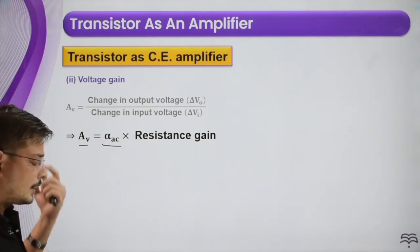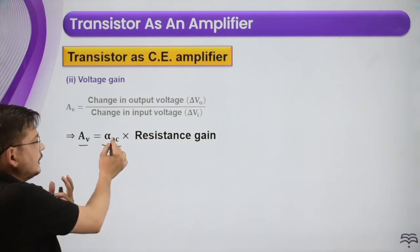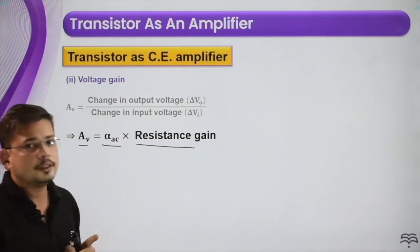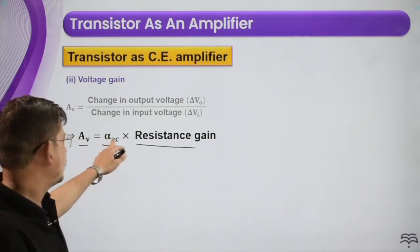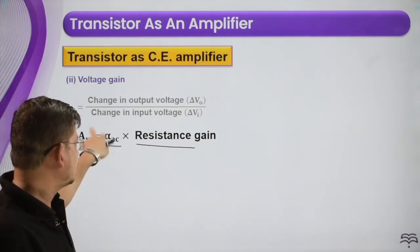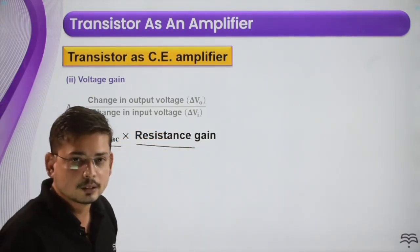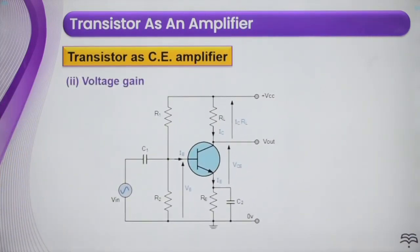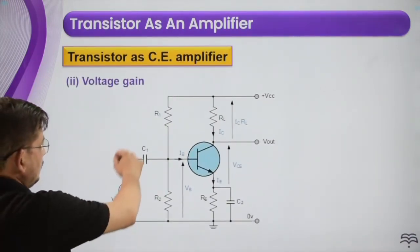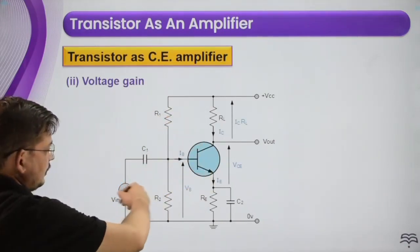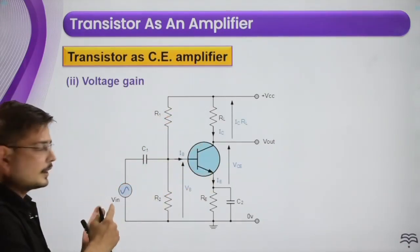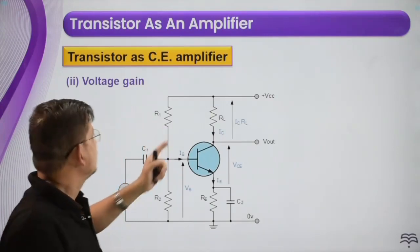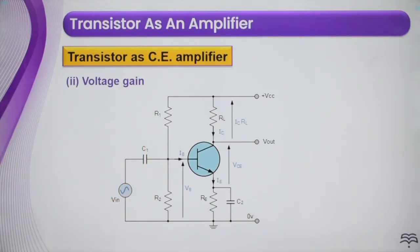The voltage gain can also be expressed as the AC current gain multiplied by the resistance gain, using the relation V = IR. So voltage gain equals current gain AC into resistance gain. This is the circuit for the transistor as a common emitter amplifier.